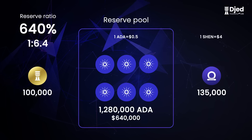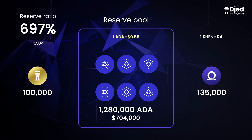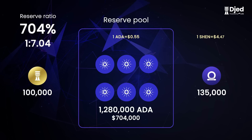However, now ADA's price increased to $0.55. While there is still the same amount of ADA in the pool, it is now worth $704,000, which changes the ratio to 704%. If we assume that the amount of SHAN minted didn't change, the price of SHAN would now be $4.47.